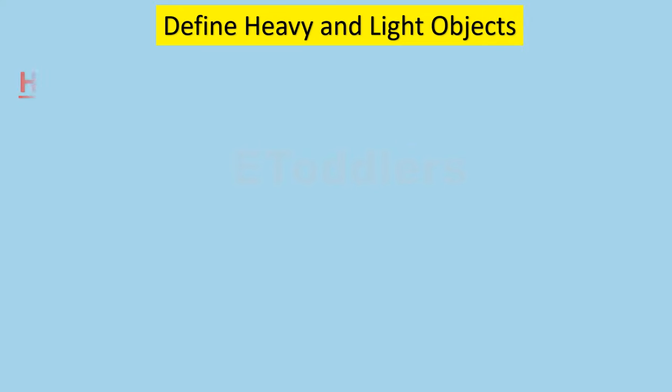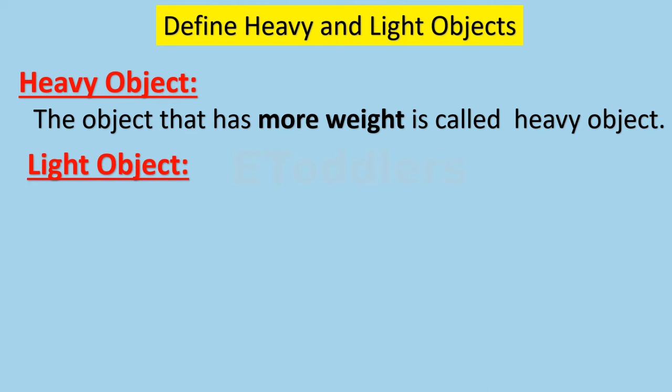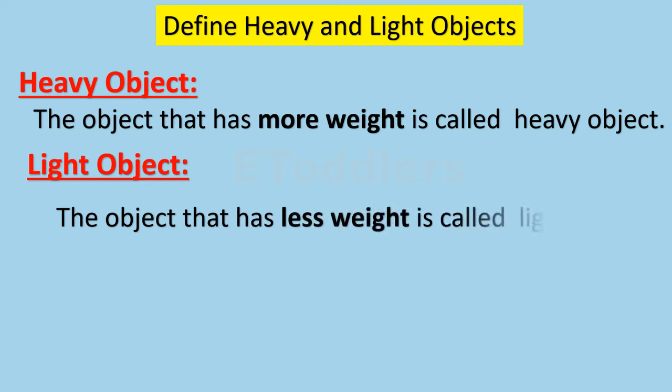Heavy object: The object that has more weight is called a heavy object. Light object: The object that has less weight is called a light object.